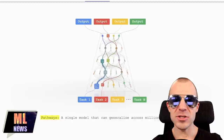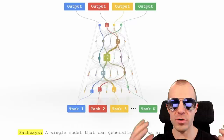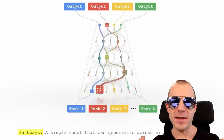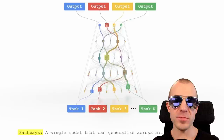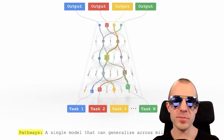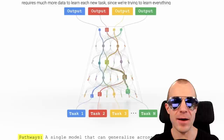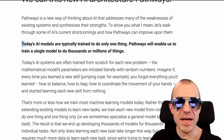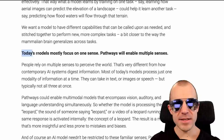Jeff Dean imagines Google's future AI projects to rely on this new architecture, where instead of having single-task neural networks, you have a giant multitask neural network that can do all tasks at once — and that would also be sparsely activated. Different tasks would leverage different paths through the network. He says today's AI models are typically trained to do only one thing, but Pathways will enable training a single model to do thousands or millions of things.